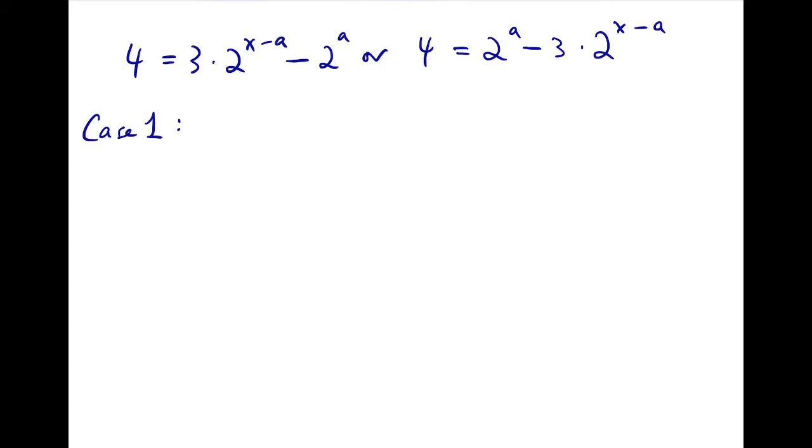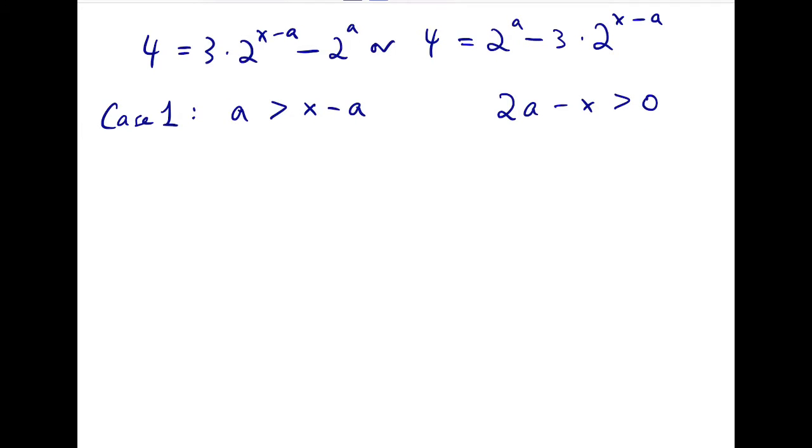Case 1, if a is larger than x minus a, then we will have 2a minus x is positive. Keep this in mind, we'll use this later. Then because x minus a is the smaller index, so we take out 2 to the x minus a.